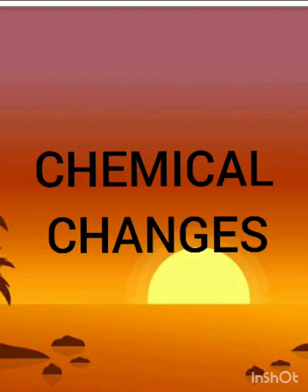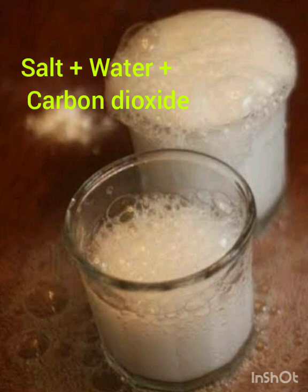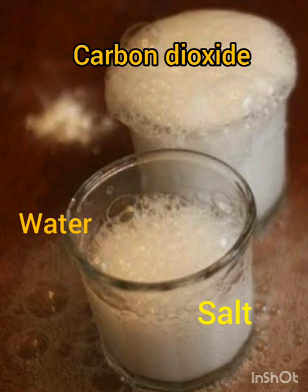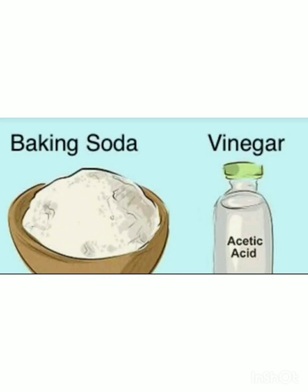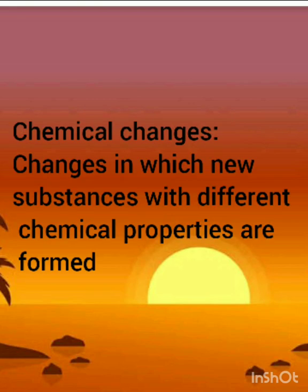Chemical Changes. As you all know, when baking soda and vinegar are mixed together, salt and water is formed with the release of carbon dioxide gas. In this reaction, the chemical properties of the new substances — i.e. salt, water, and carbon dioxide — are totally different from the reactants, i.e. baking soda and vinegar. So we can define chemical changes as: the changes in which new substances with different chemical properties are formed are called as chemical changes.